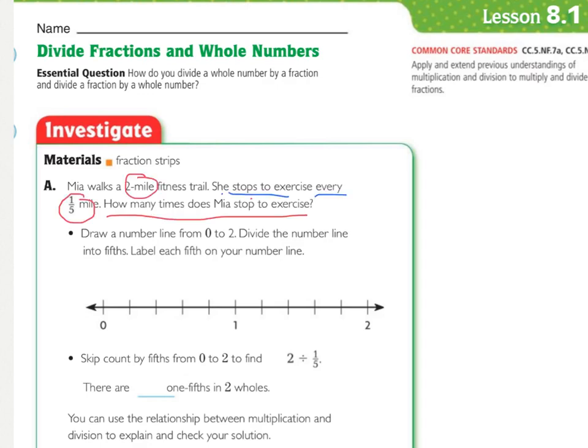You should have underlined how many times does Mia stop to exercise. Circled two miles because that's the total amount. And then one-fifth because that's how often she stops. And then in blue I underline stops every.